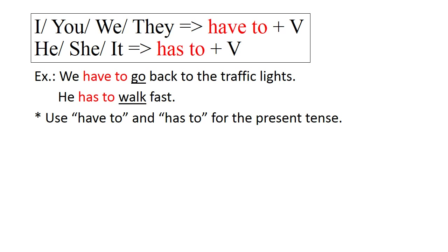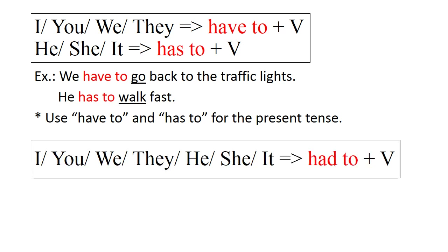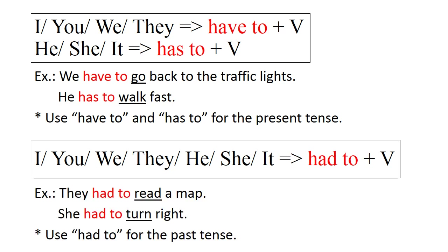Với những chủ ngữ I, you, we, they, he, she, it, đều dùng have to. Và sau đó cũng là một động từ nguyên mẫu. Example: They had to read a map. She had to turn right.